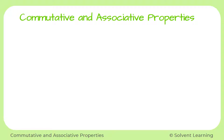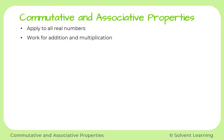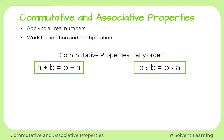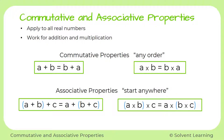So just to summarize: the commutative and associative properties apply to all real numbers, and they only work for addition and multiplication. The commutative properties tell us that we can add or multiply in any order. The associative properties tell us that we can start anywhere when we're multiplying or adding a bunch of numbers together and we'll still get the same answer. So now you know how to apply the commutative and associative properties for addition and multiplication.